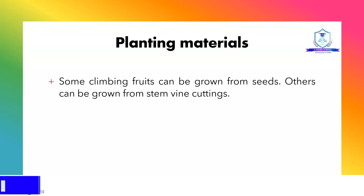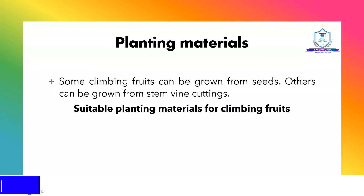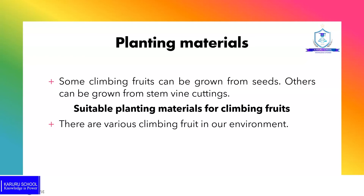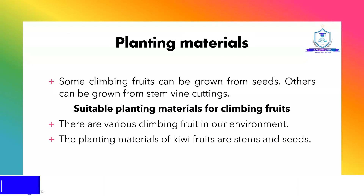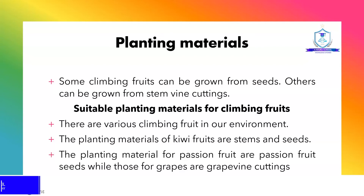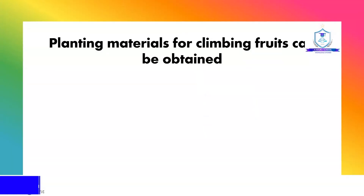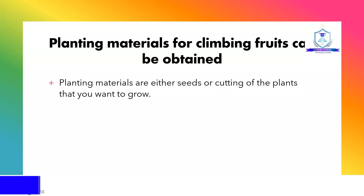Some climbing fruits can be grown from seeds, while others can be grown from stem or vine cuttings. The planting materials for kiwi fruits are stems and seeds, for passion fruit are seeds, and for grapes are vine cuttings.